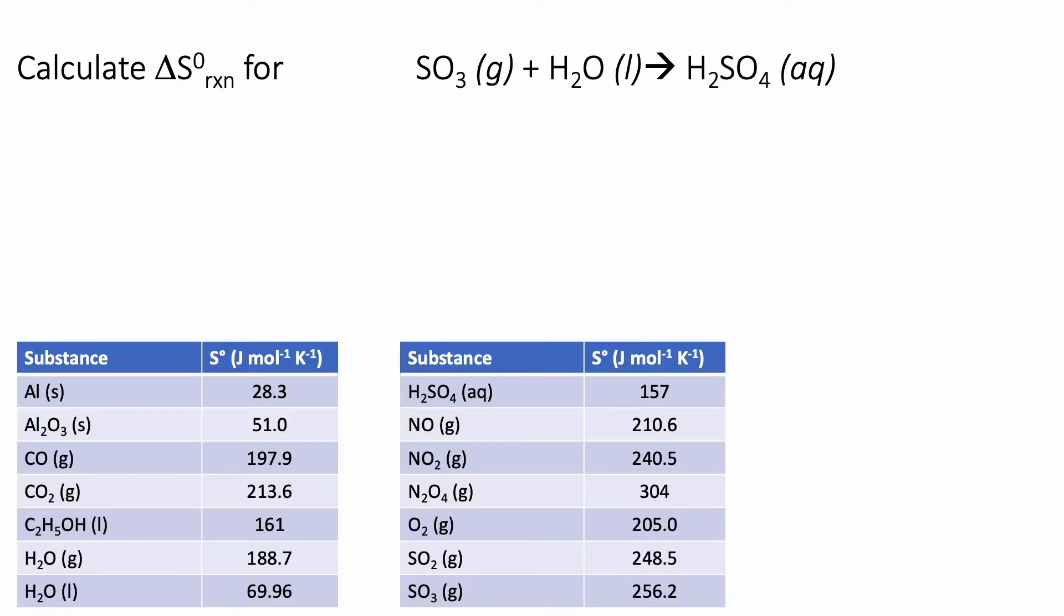So now we're going to calculate the change in entropy for this particular reaction in which gaseous sulfur trioxide reacts with liquid water to form aqueous sulfuric acid. This is the reaction that causes acid rain. So here is our equation that I brought up on the previous slide.